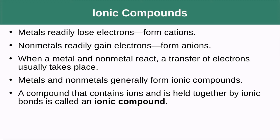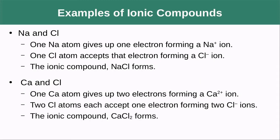Metals readily lose electrons and non-metals readily gain them. When a metal and a non-metal react, electrons are transferred from the metal to the non-metal — that electron really wants to be with the non-metal. So metals and non-metals generally form ionic bonds, and the compounds formed are called ionic compounds. For example, sodium gives up an electron, chlorine accepts it, and we get the ionic compound NaCl — table salt.